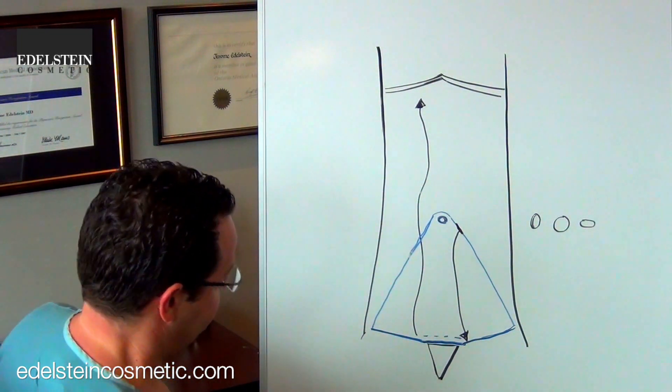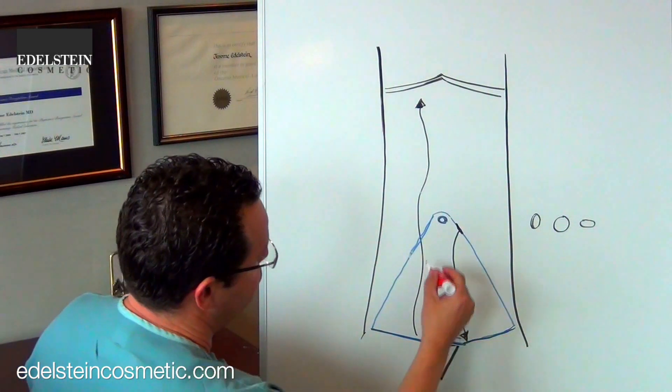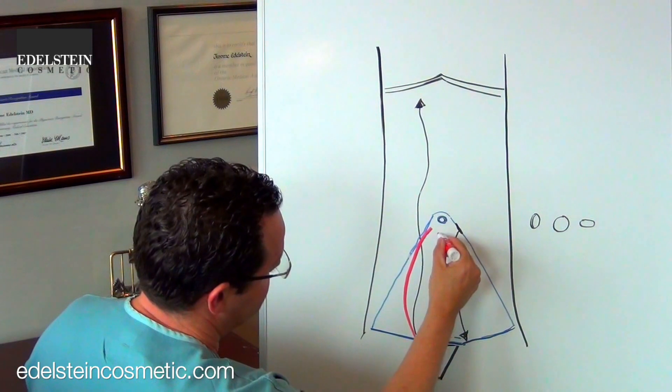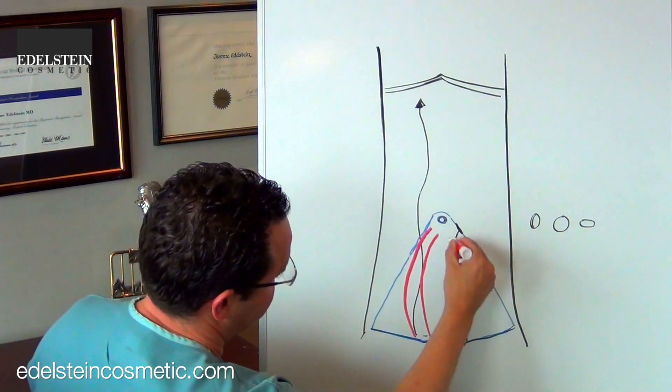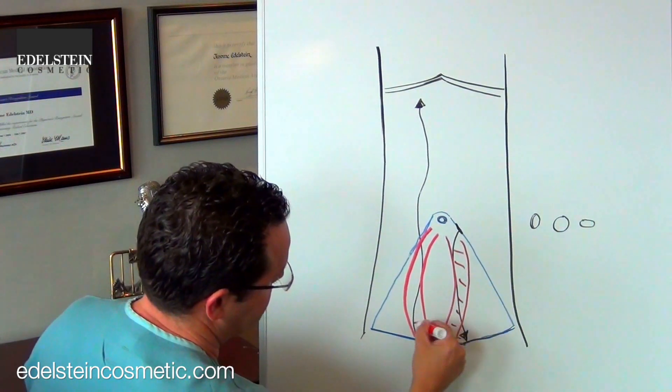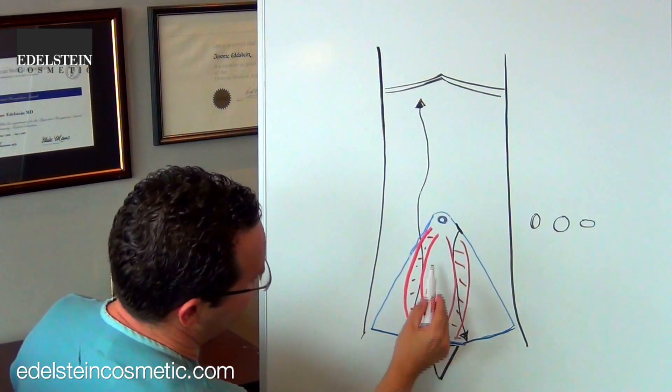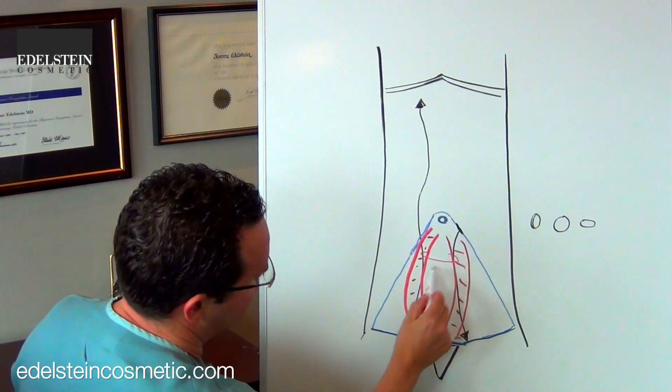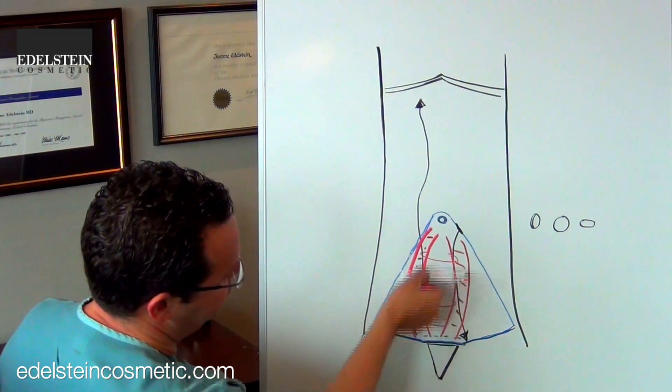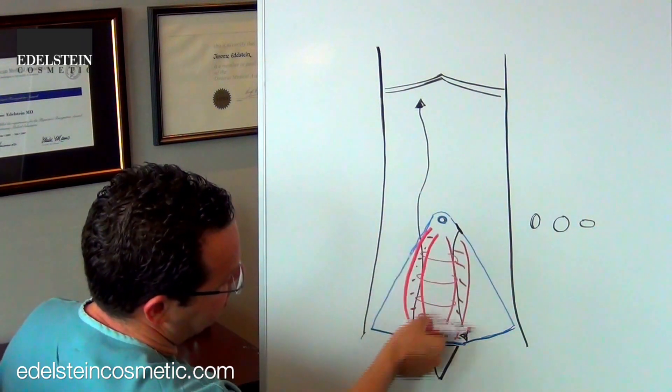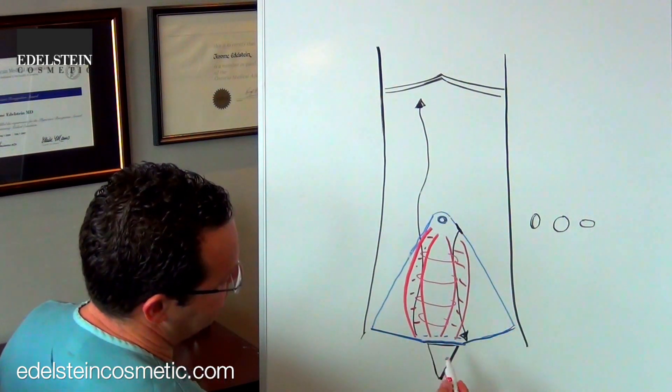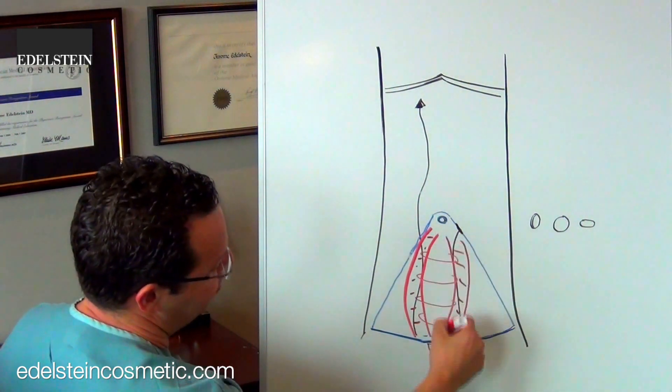The muscles are often spread apart like this. What I can do is suture the muscles back together, and this is going to help flatten the tummy and pull in the sides a little bit. In a full tummy tuck, we not only do that below the belly button, but we also do it above the belly button as well.